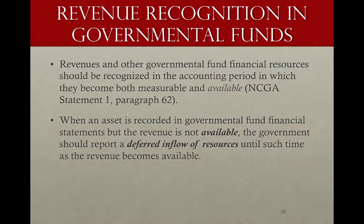In the governmental funds, which report under modified accrual and the current financial resources measurement focus, revenues are recognized when they are not just measurable and collectible, but also when they're considered available — meaning collected during the period or soon enough after the end of the period to be used to liquidate current period expenditures. If a receivable has been recorded in a governmental fund but the revenue is not considered available, that portion is reported as a deferred inflow of resources until the revenue becomes available.